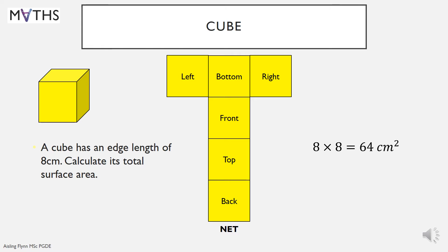So for each individual face, its area is eight times eight, which is 64 centimeters squared. And we have six of those. So multiply by six and get 384 centimeters squared.